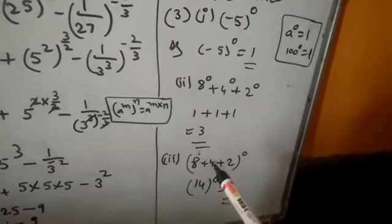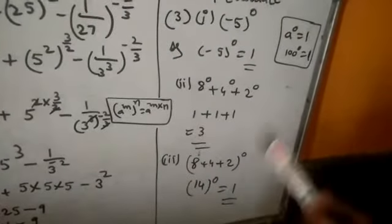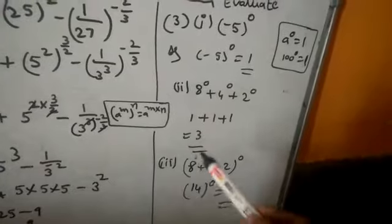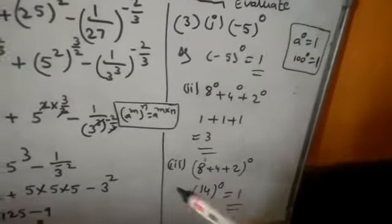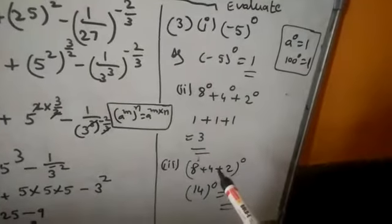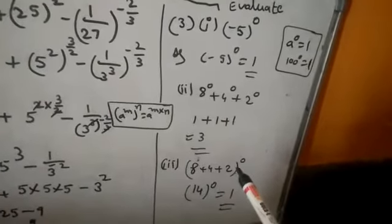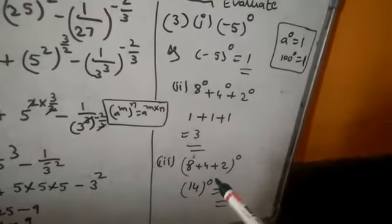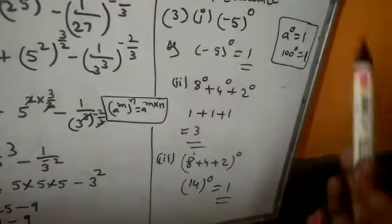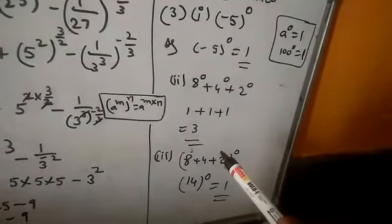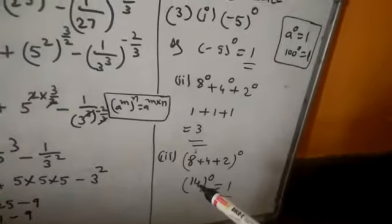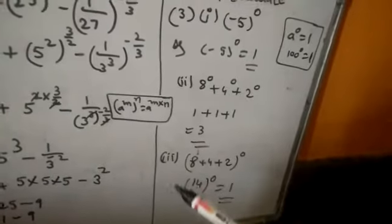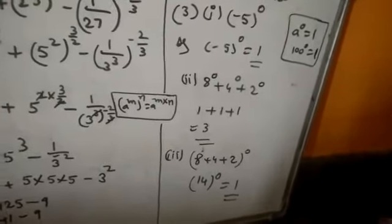Third one: (8 + 4 + 2) whole to the power of 0. Full expression to the power of 0 — first, inside the bracket we should do addition: 8 + 4 = 12, 12 + 2 = 14. So 14 to the power of 0. Any number to the power of 0 equals 1. So 14 to the power of 0 equals 1. Third one answer is 1.